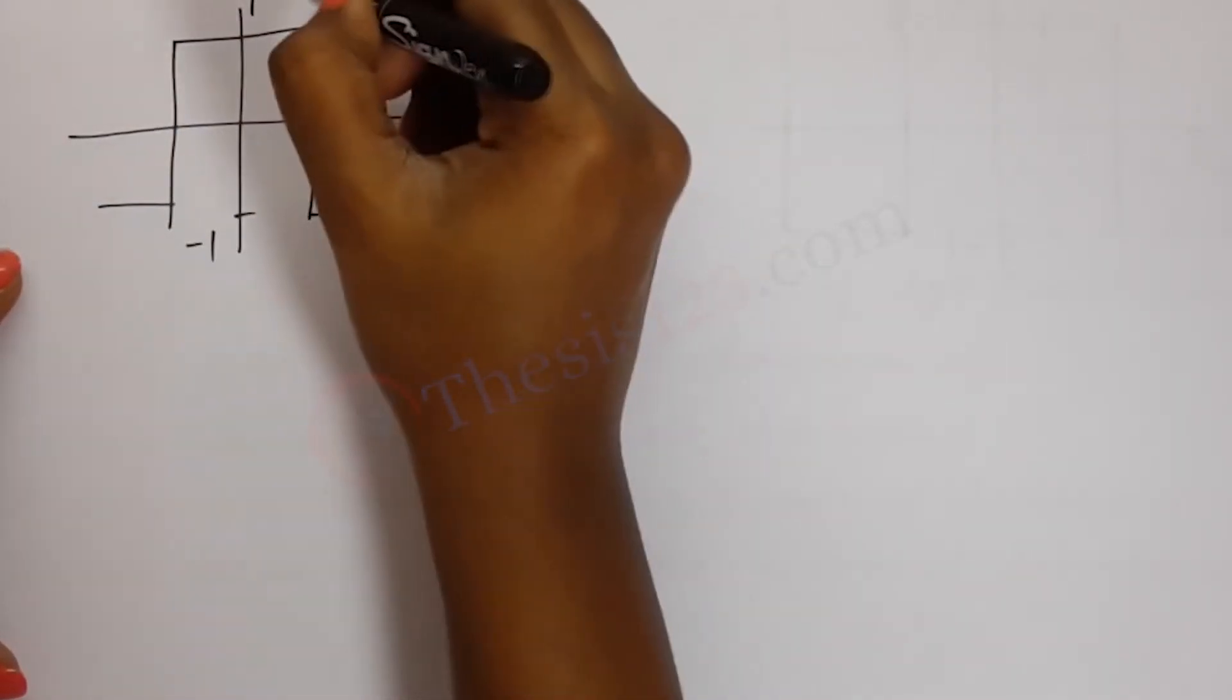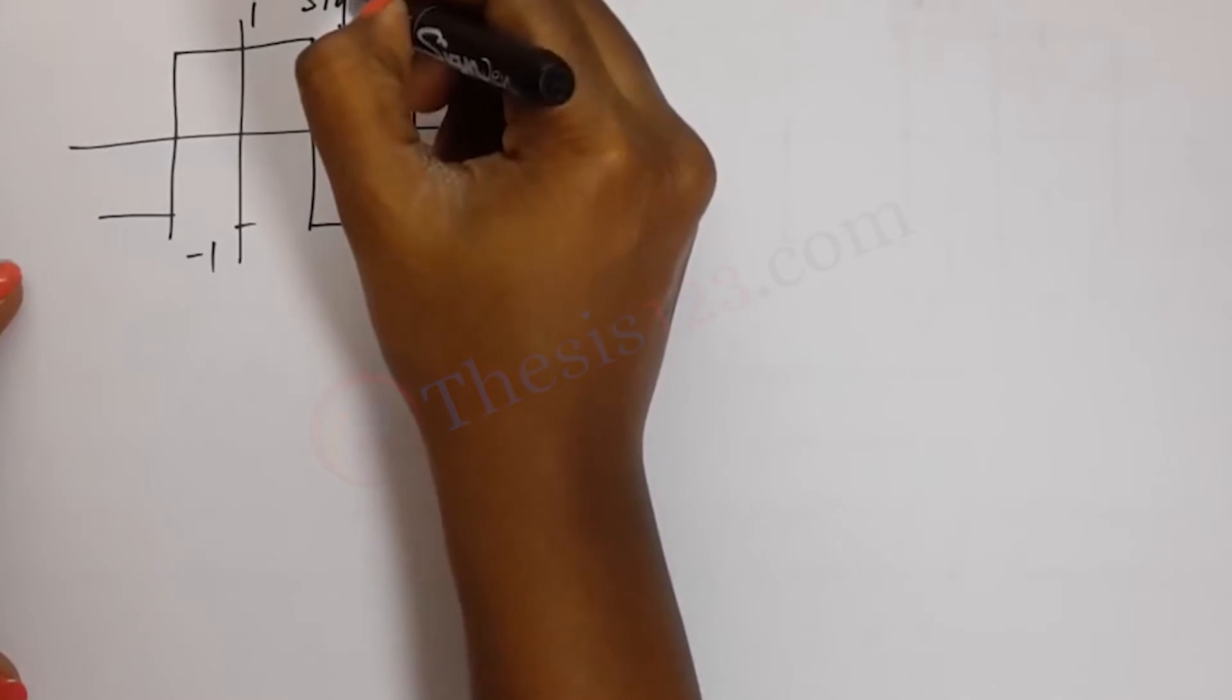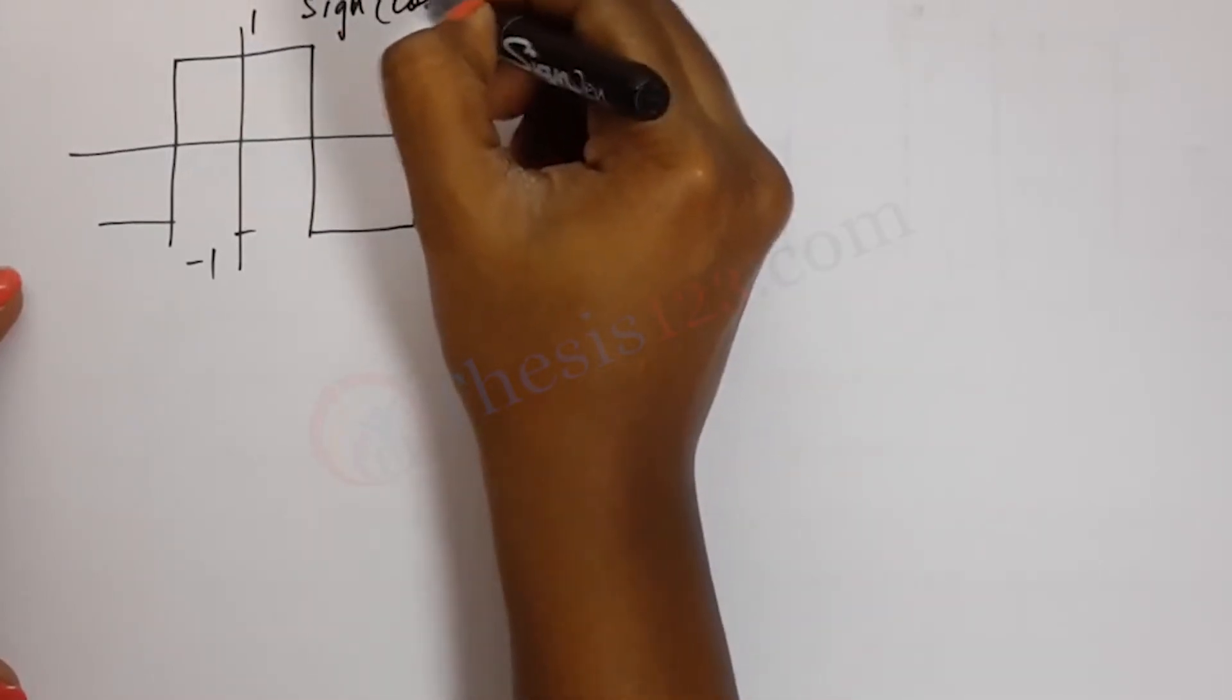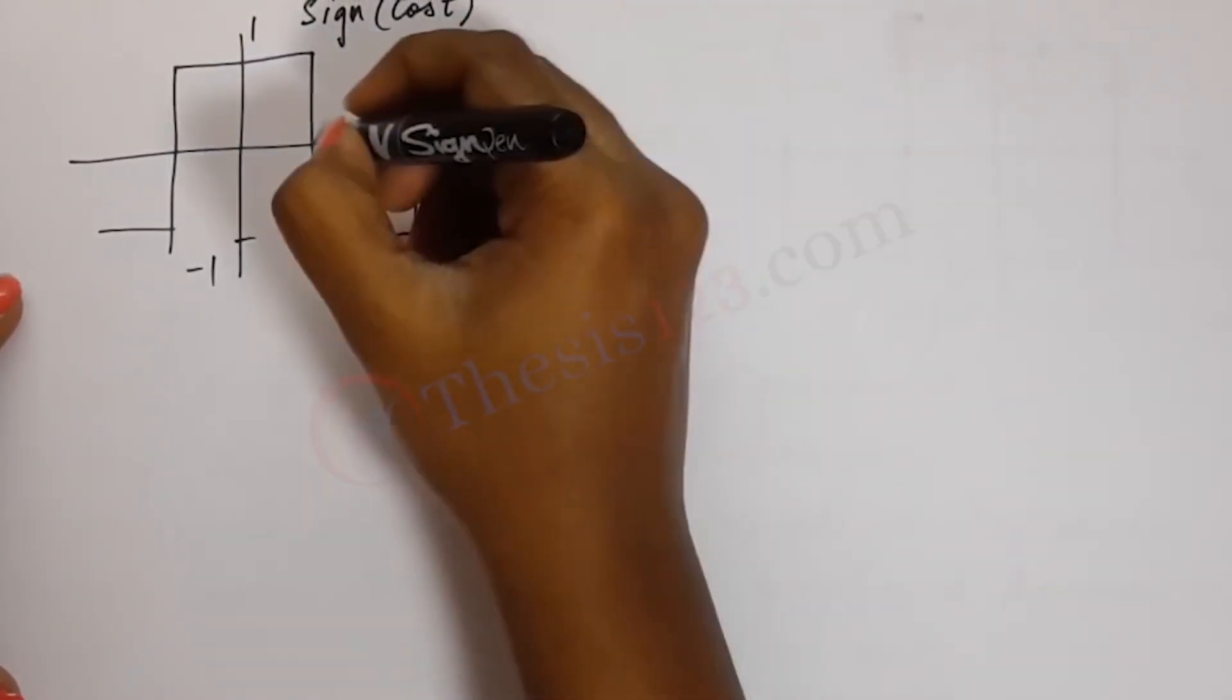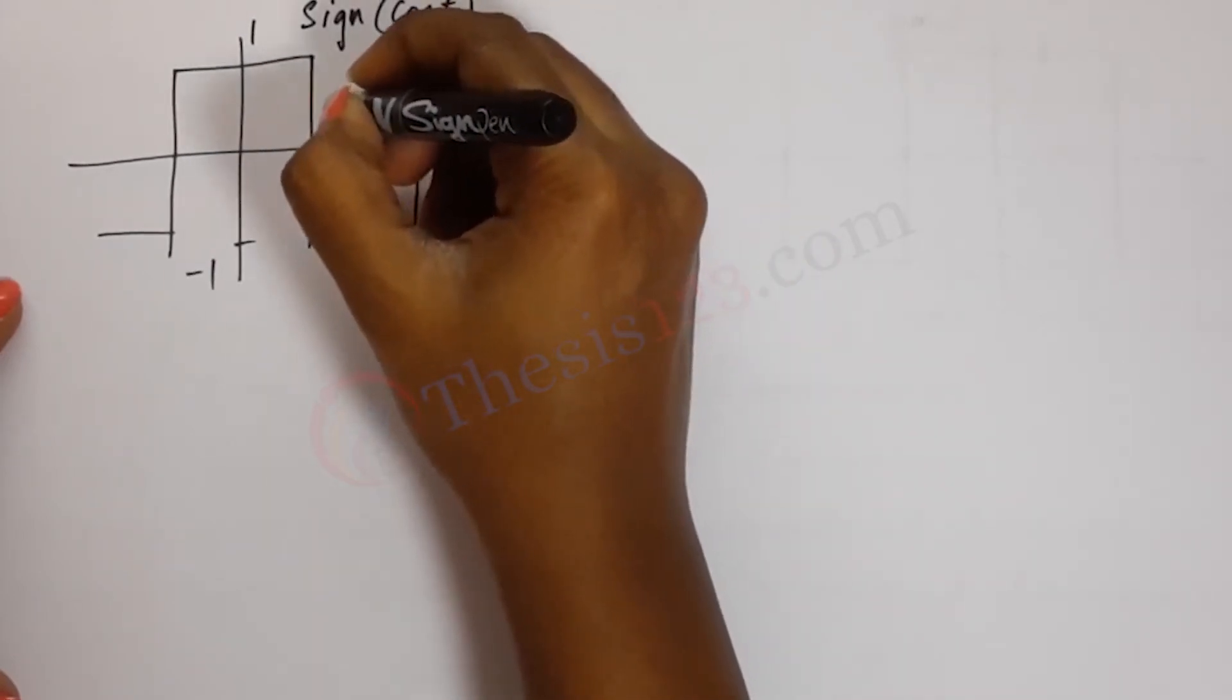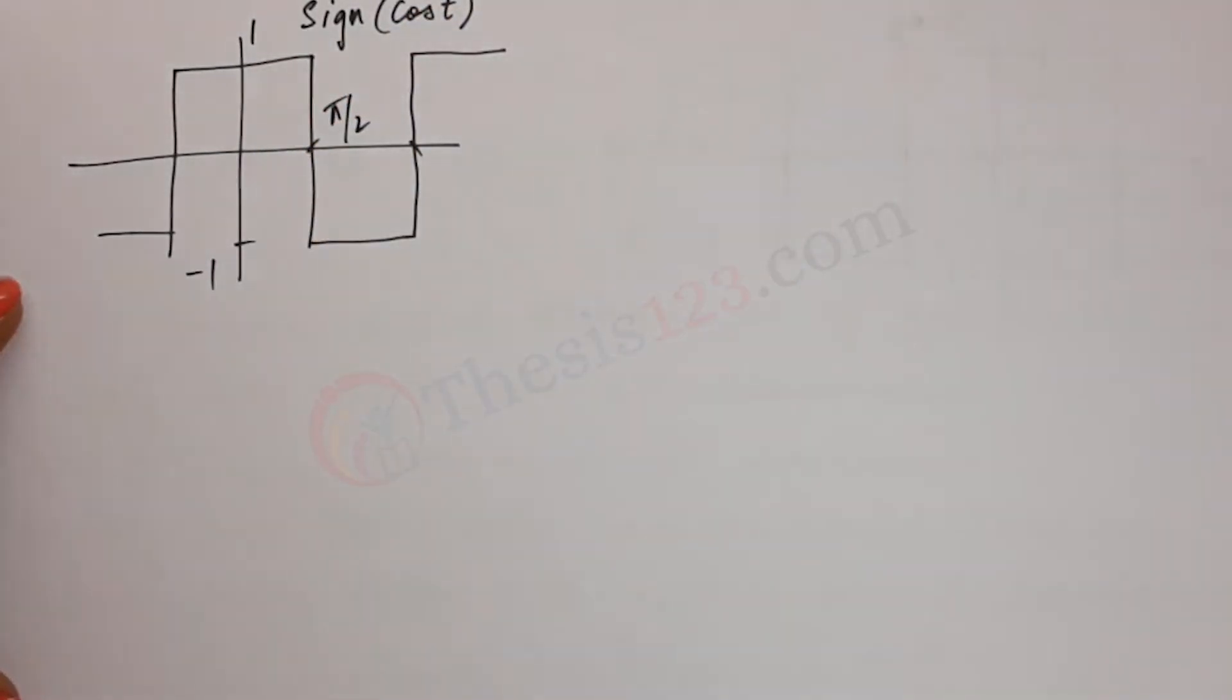this is 1 and the waveform is for signum cos t. And at every point it passes through 0, it is pi by 2.